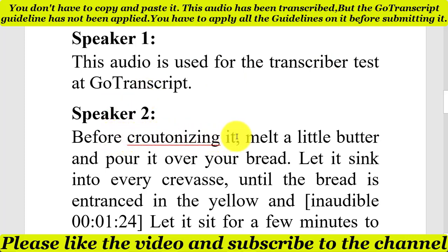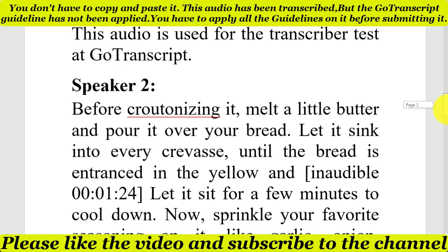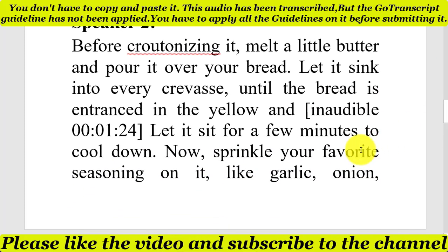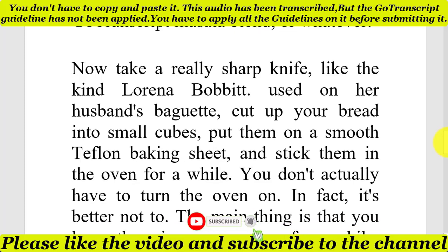Before croutonizing it, melt a little butter and pour it over your bread. Let it sink into every crevasse until the bread is entrancingly yellow. Let it sit for a few minutes to cool down. Now sprinkle your favorite seasoning on it like garlic, onion, pumpkin spice, herbes de Provence, GoTranscript Masala blend, or whatever.